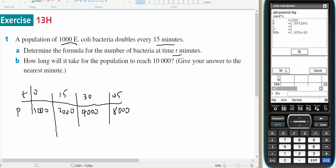And that tells me that my rule in the form of Y equals A times B to the power of X. A should equal 1,000. And B should equal 1.04729. So my rule will be population equals 1,000 times 1.04729 to the power of T.